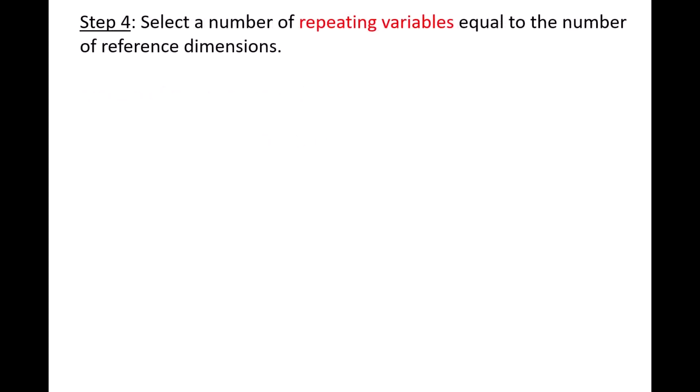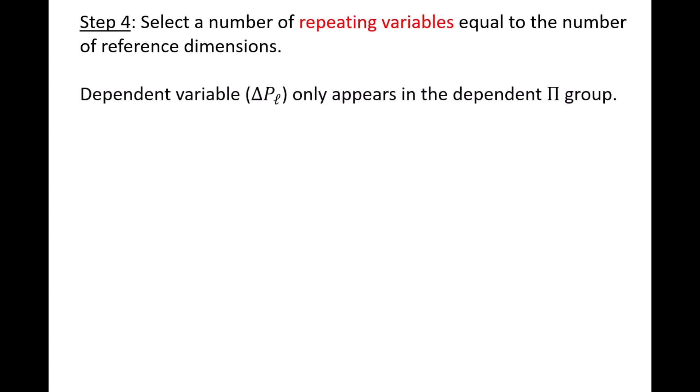In step 4, we select our repeating variables, which are variables that could potentially appear in all pi groups. The number of repeating variables is equal to the number of reference dimensions k, which is 3 in the current problem. We only consider the independent variables as potential candidates for repeating variables, since the dependent variable delta PL should only appear in one of the pi groups, which we will call the dependent pi group. The independent variables that could possibly be selected as repeating variables are v, d, rho, and mu.